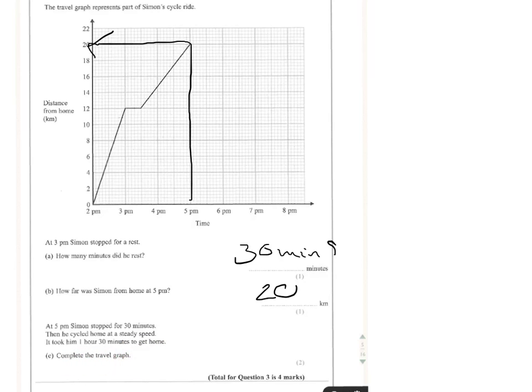So we'll start with his 30 minutes rest. So his 30 minutes rest is represented by five little squares. And then it takes him an hour and a half. So if he's leaving at 5.30, he's going to get back at 7.